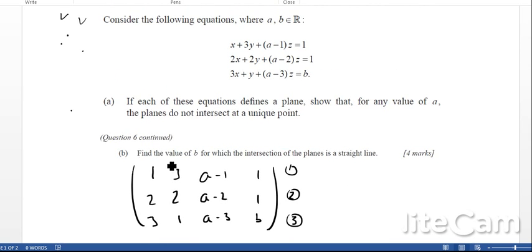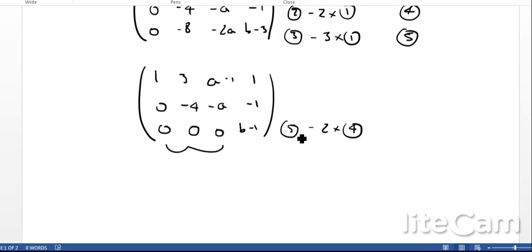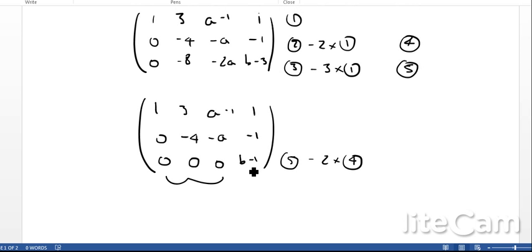For part b, we get four marks for this, which is very generous. Find the value of b for which the intersection of the planes is a straight line. We notice here if b is equal to 1, then this equation here is going to be consistent. We'll end up with 0x plus 0y plus 0z equals 0, so basically 0 equals 0.